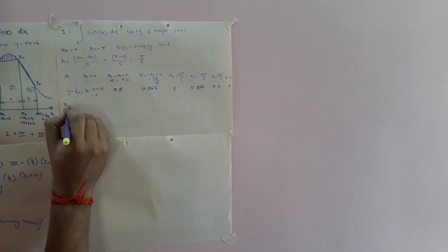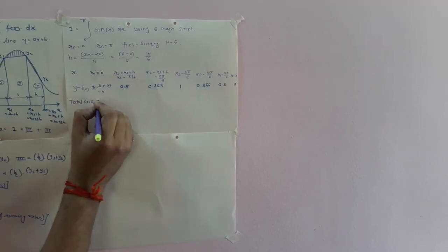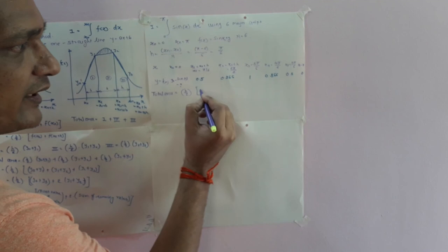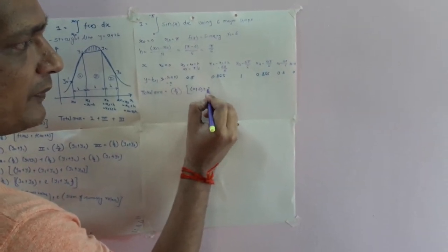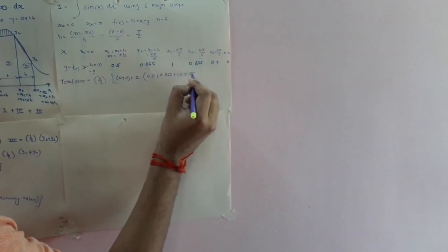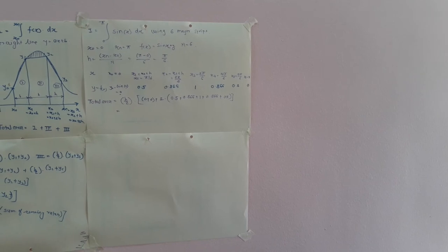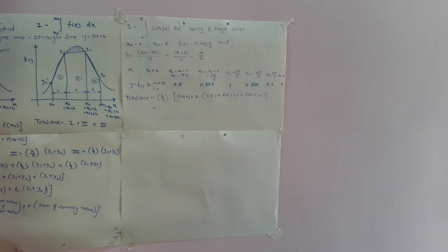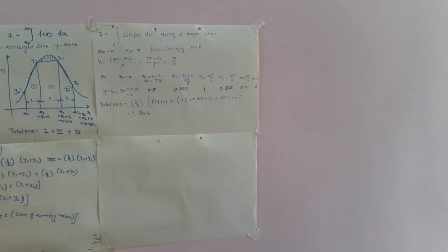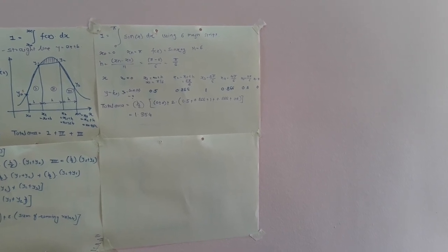Now evaluating the total area using the trapezoidal formula: total area = h/2 × [first value + last value + 2 × (remaining values)] = π/6 / 2 × [0 + 0 + 2 × (0.5 + 0.86 + 1 + 0.86 + 0.5)]. Calculating this with a calculator gives approximately 1.954, which is close to the exact answer of 2.